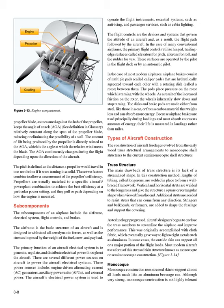Types of Aircraft Construction. The construction of aircraft fuselages evolved from the early wood truss structural arrangements to monocoque shell structures to the current semi-monocoque shell structures. Truss Structure. The main drawback of truss structure is its lack of a streamlined shape. In this construction method, lengths of tubing called longerons are welded in place to form a well-braced framework. Vertical and horizontal struts are welded to the longerons and give the structure a square or rectangular shape when viewed from the end. Additional struts are needed to resist stress that can come from any direction. Stringers and bulkheads, or formers, are added to shape the fuselage and support the covering.